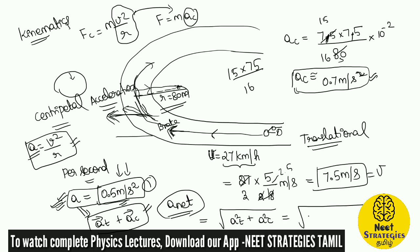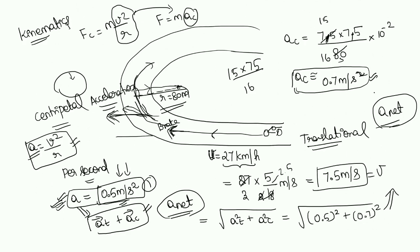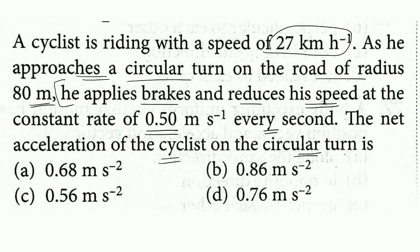So we calculate root of (at² + ac²) = root of (0.5² + 0.7²). The net acceleration of this cyclist is root of (0.25 + 0.49), which comes out to be 0.86 meter per second squared.